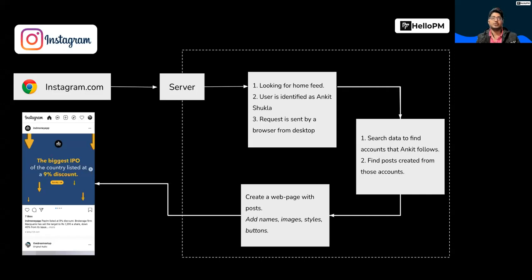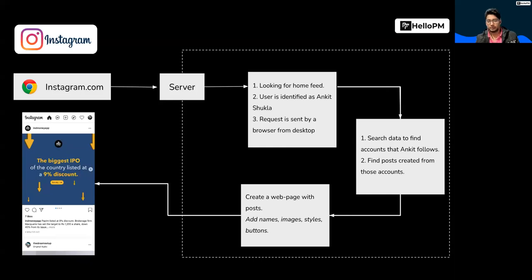The server has understood it has to present the home feed. Now the business logic runs. It tells the database to find data — specifically, find all the accounts that this user follows. Because when you go to Instagram.com, you get the home feed, which shows all posts from accounts you've followed. So first step: find all accounts that Ankit follows. Second step: find the posts created by those accounts. Then combine this data and create a webpage with posts, including names, images, styles, colors, buttons like follow and message.